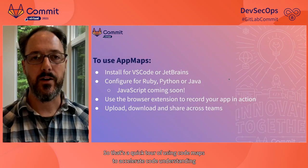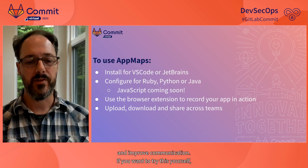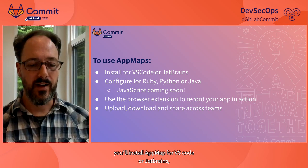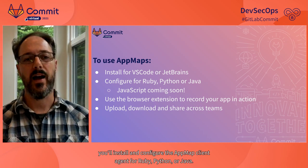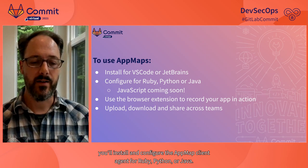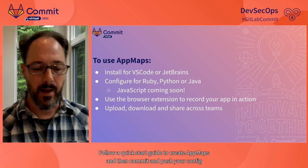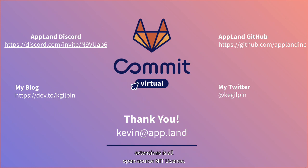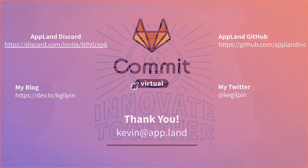So that's a quick tour of using code maps to accelerate code understanding and improve communication. If you want to try this yourself, you'll install AppMap for VS Code or JetBrains, install and configure the app map client agent for Ruby, Python, or Java, follow a quick start guide to create app maps, and then commit and push your config changes so that everyone on your team can make app maps for the repo. If you want more information, check out these links — all the client code for AppMap, including language agents and the code editor extensions, is all open source MIT license. Thanks for watching the talk, I'm looking forward to your comments and questions.